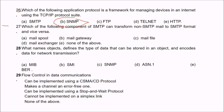Question 27: which component of SMTP can perform conversion from non-SMTP mail to SMTP format and vice versa? The answer is B — the mail gateway, because the mail gateway is the component of SMTP that performs non-SMTP to SMTP format conversion and vice versa.